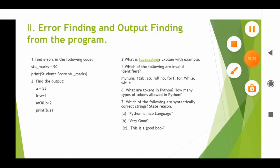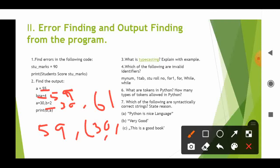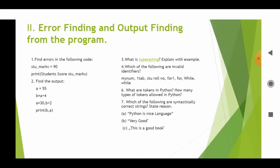Next question: find the output. a is assigned 55. Then b equals a plus 4, so b is 59. Then a is assigned (30, 30) — a tuple. b is 59 plus 2, so b becomes 61. Print b comma a: b is 59, a is (30, 61). This is the output of your second code.